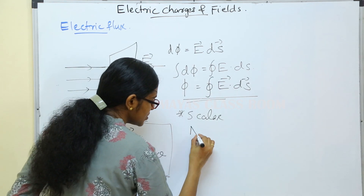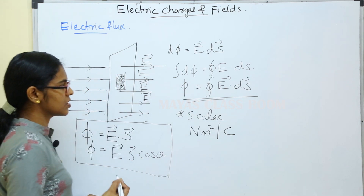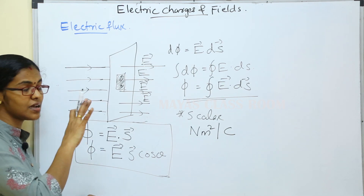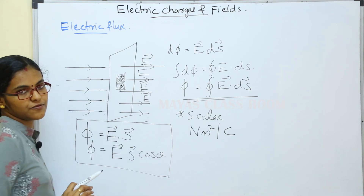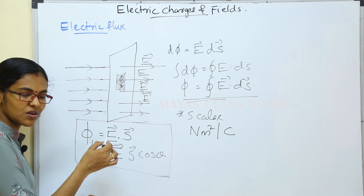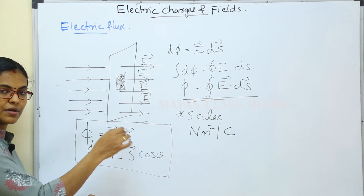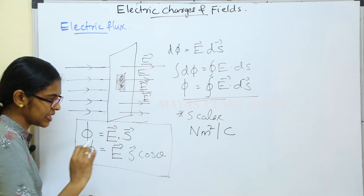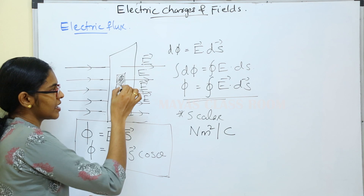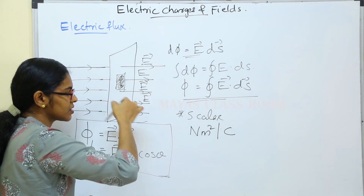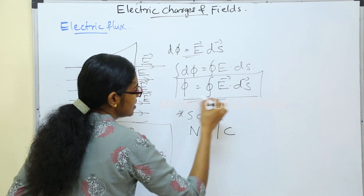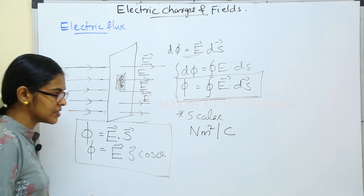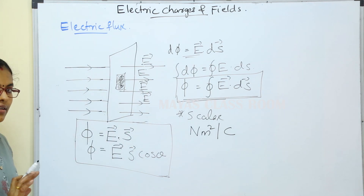The unit of electric flux is Newton meter square per coulomb (Nm²/C). Electric flux is defined as the total number of electric field lines passing normally through a surface, which equals the product of electric field and the component of surface area perpendicular to the field. The equation is φ = E · S, and for a small surface dφ = E · dS. It is a scalar quantity with unit Nm²/C.